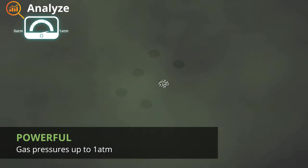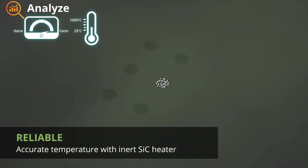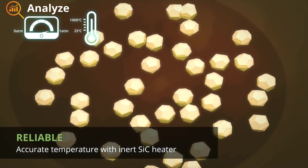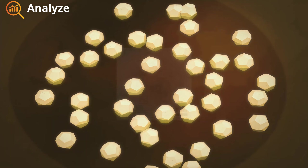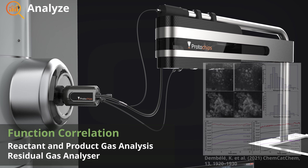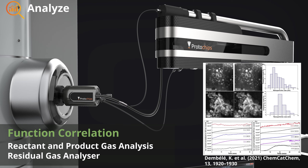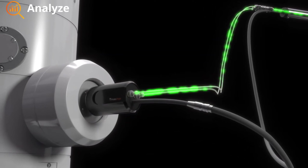Our patented heating technology utilizes an extremely uniform ceramic heating membrane made of silicon carbide, allowing users to reach temperatures up to 1000°C without the risk of unintended catalytic side reactions from a metallic heating coil. Using an integrated residual gas analyzer, specifically designed to work alongside a TEM without diminishing imaging resolution, allows our users to correlate the function of the catalyst back to the structure being seen in the TEM. Fast detection speeds of less than 3 seconds make correlation and structure to activity changes easy.